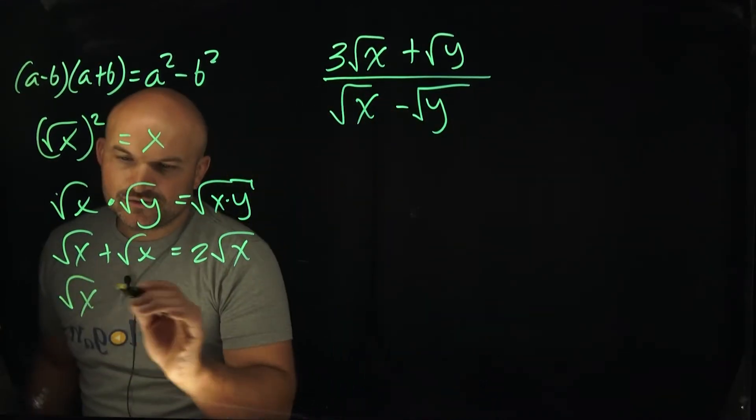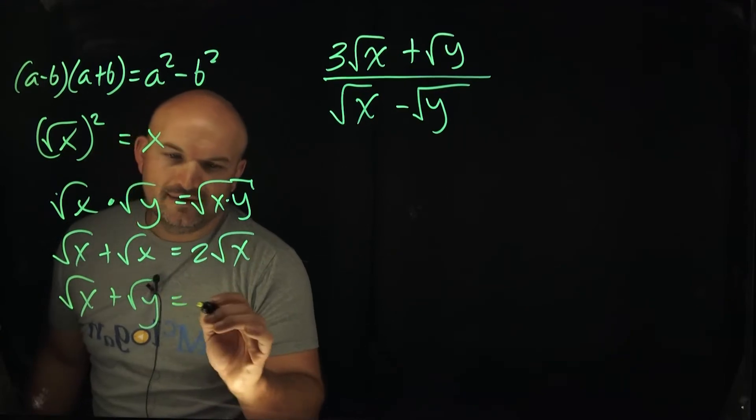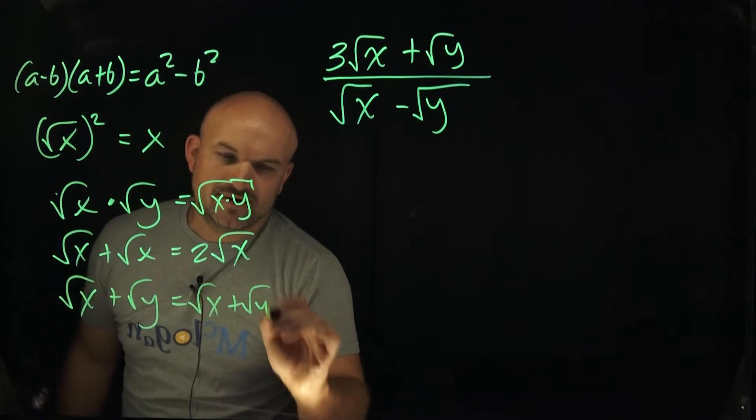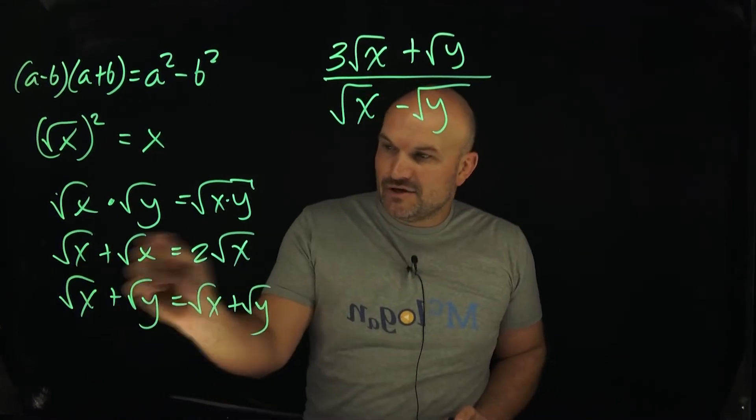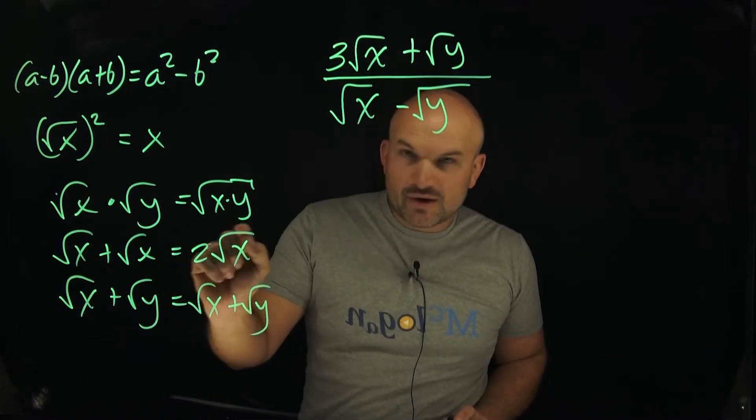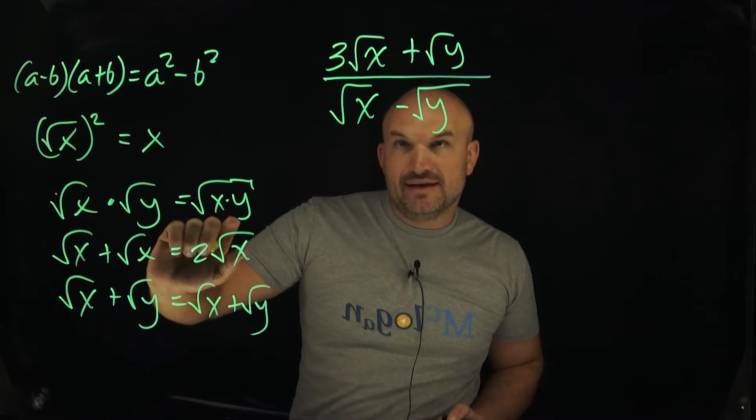So for instance, if I had square root of x plus the square root of y, that is just the square root of x plus the square root of y. I can't simplify that any further. That's like combining x plus y. They're not the same, so you can't combine them. And just notice that that's two square root of x's. We already have like a little two in that case.